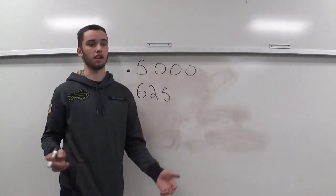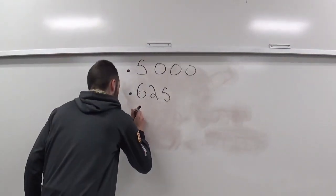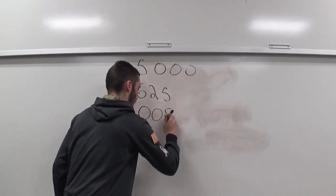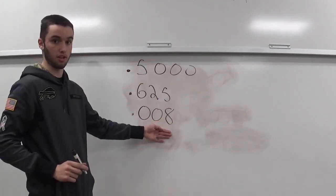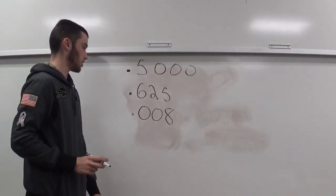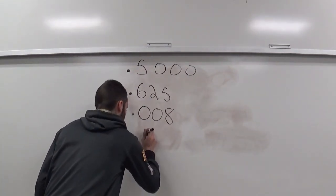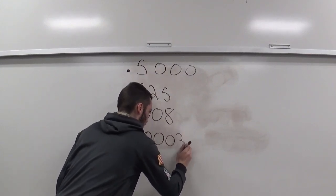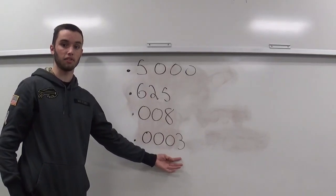If you wanted, let's say, eight thousandths, that's .008, eight thousandths of an inch. If you wanted three tenths, that's three tenths.